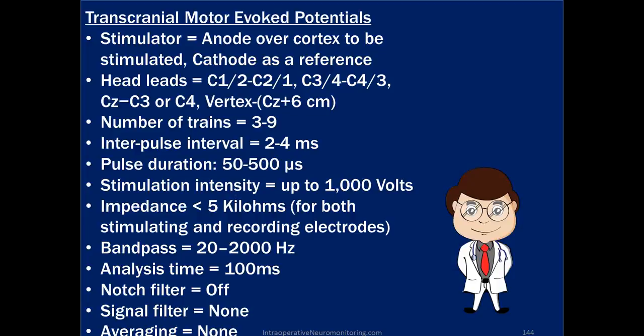So transcranial motor evoke potential, have to know how to set it up. The stimulator is the anode over the cortex to be stimulated, cathode as the reference. Of course, that flips if we start doing internal capsule or white tract matter stimulation. We use the cathode to stimulate, but when we are over the gray matter for transcranial motor evoke potentials, we use anodal stimulation.